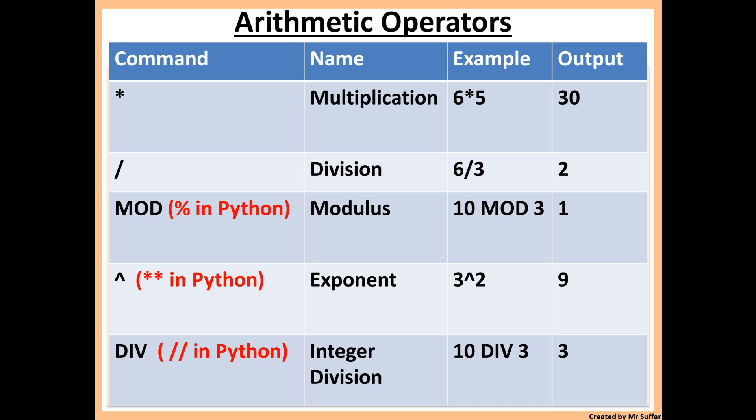Finally we have DIV, which is integer division. DIV in pseudocode represents integer division, and it's also represented by the double slash in Python. Integer division just means you divide the number by another one and you will always round down.